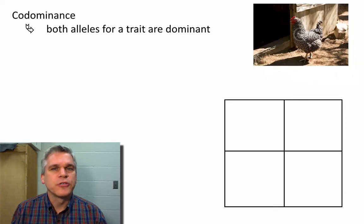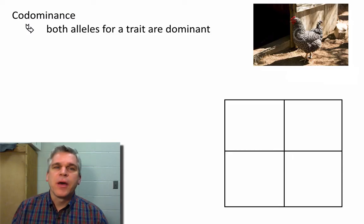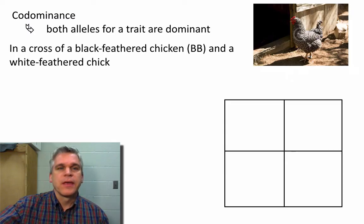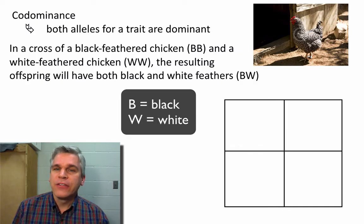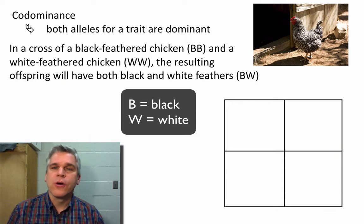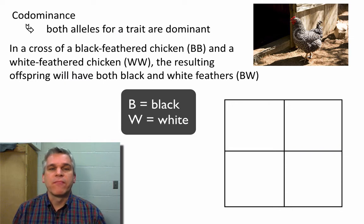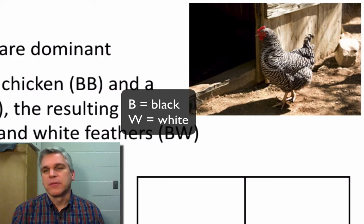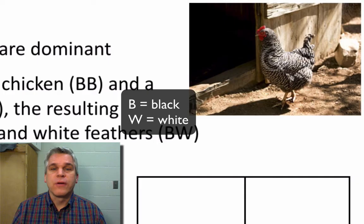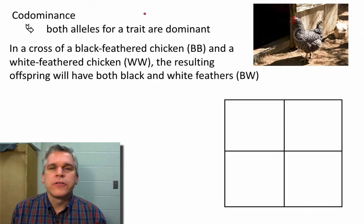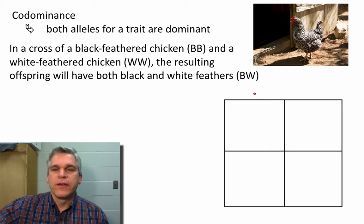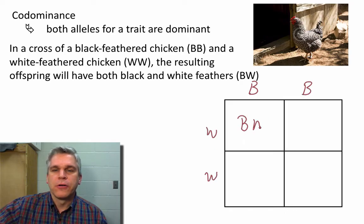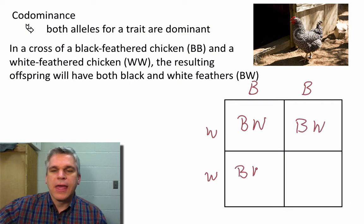Our next example is similar to incomplete dominance — this is called codominance. In this case, both alleles are dominant, and they're fully dominant, which means they are going to be fully expressed. An example here is with chickens: black feathers is a dominant trait, and white feathers is also a dominant trait. The resulting offspring will have both black and white feathers, which are called erminette chickens. Some of the feathers are black, some are white, but both traits are being fully expressed. So if we were to do this cross, crossing the black-feathered and the white-feathered chicken, we can see that all of them would be erminette — they're going to have both black and white feathers.